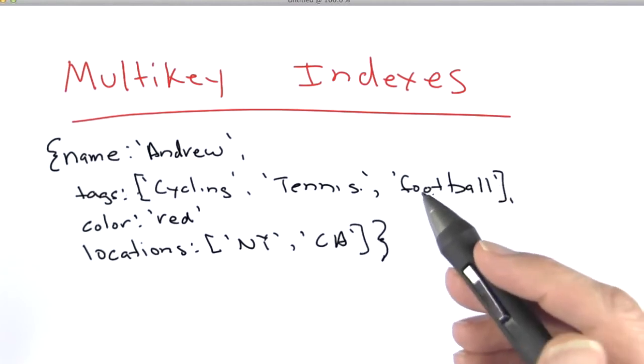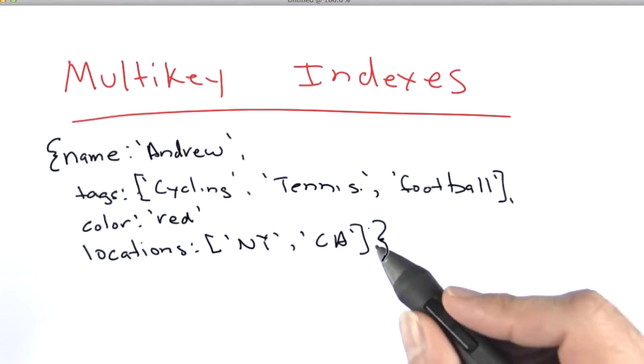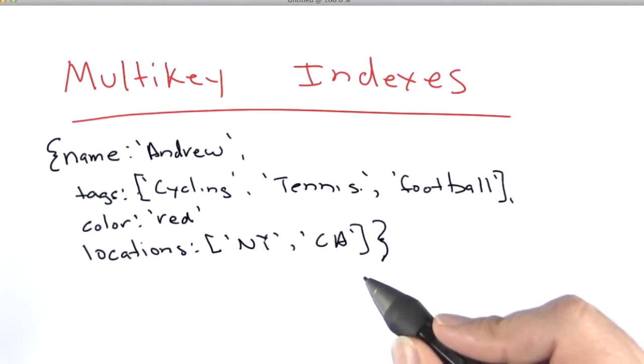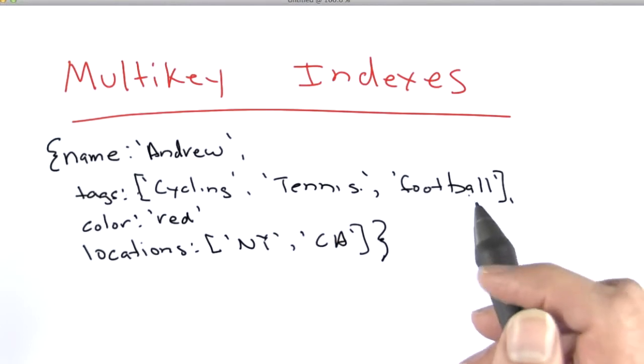Now MongoDB is dynamic. It doesn't know when you create the index what documents are going to exist in the collection. So it's not until you actually insert a document whose value is an array that it becomes a multi-key index.